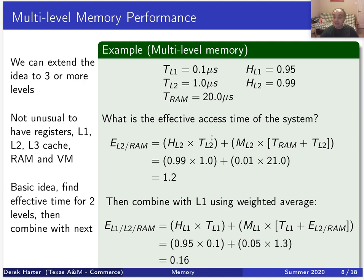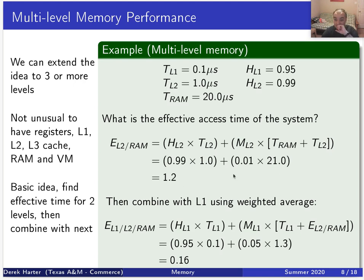We first figure out the effective access time for the last two levels — level-two cache and RAM. If the hit ratio for level-two cache is 0.99, meaning 99% of the time the stuff we need is in level-two cache, the effective time = 0.99 × 1 + 0.01 × (20 + 1) = 0.99 + 0.21 = 1.2 microseconds. The reason we add 20 + 1 on a miss is that you first fetch from RAM into level-two cache (costs 20μs), then re-read from level-two cache (costs 1μs).